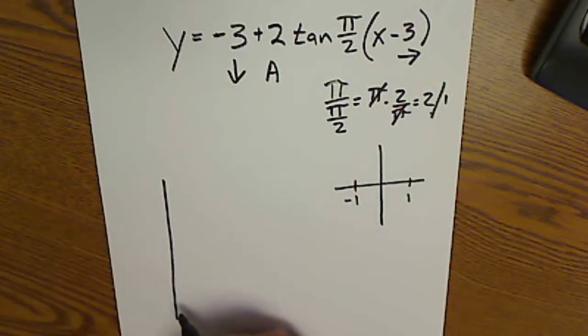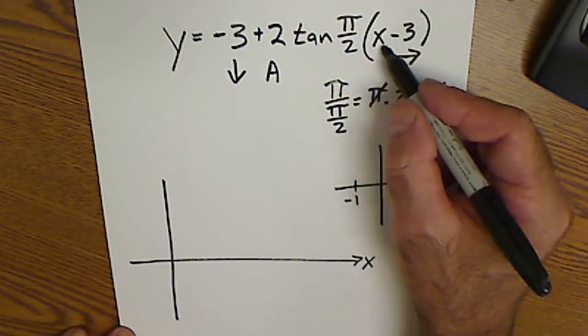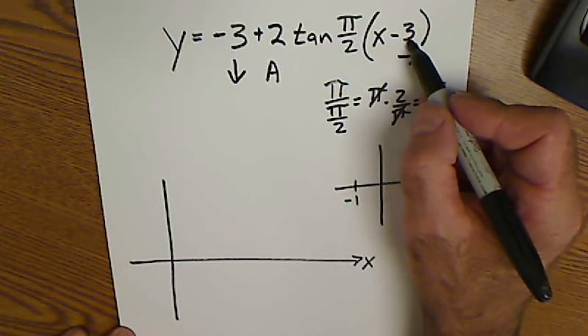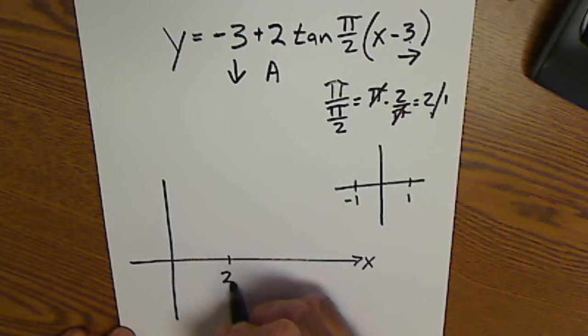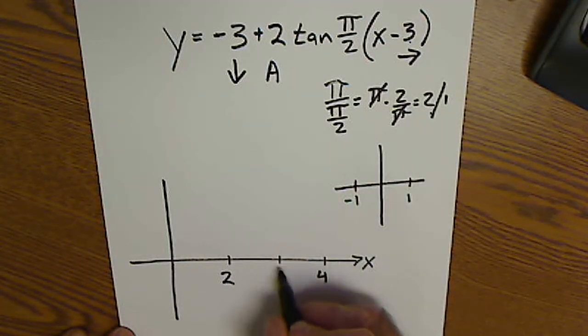From there, I'll label my x-axis in radians. Negative 1, I go over 3, so I go from 2. 1 plus 3 is 4. Half cycle at 3.